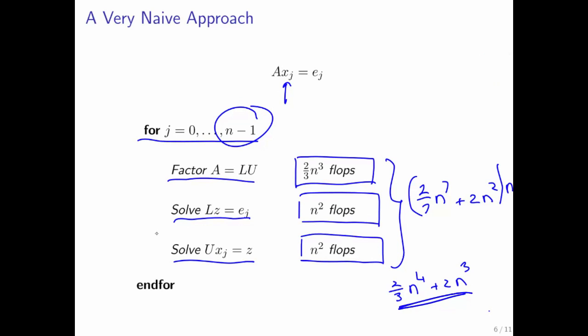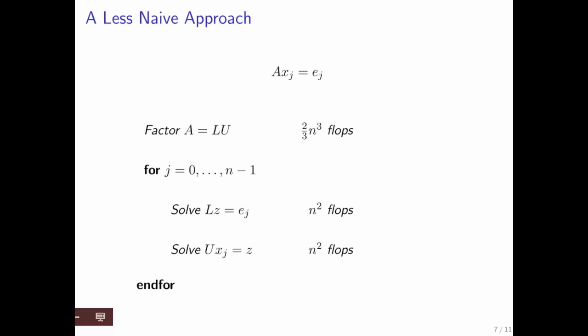Now, what do we notice? Well, we keep refactoring A, and that matrix A is always the same matrix. So what we really want to do is bring that outside the loop and do that exactly once. That gives us this loop right here. So now we factor once, and then we only do a lower and an upper triangular solve with each right-hand side, which starts as a unit basis vector.